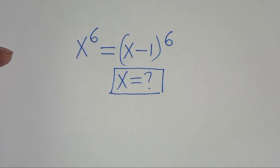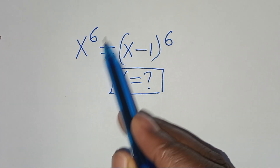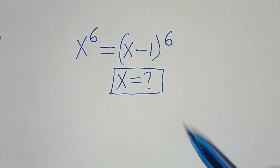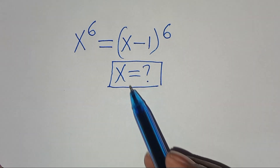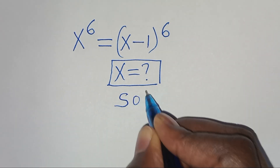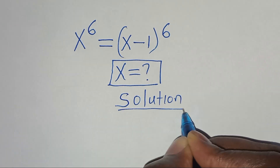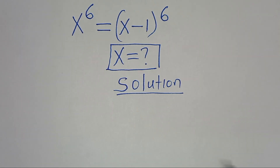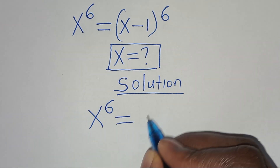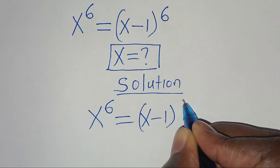Hello everyone, you are welcome to solve this nice algebra problem, which is x to the power of 6, this is equal to x minus 1 to the power of 6. So what are the values of x? Now let's provide a solution from here. We have x to the power of 6, this is equal to x minus 1 to the power of 6.